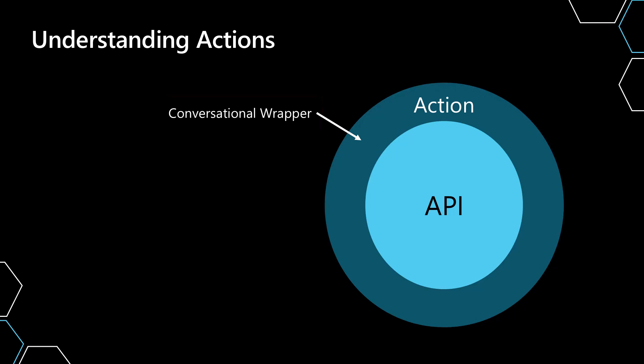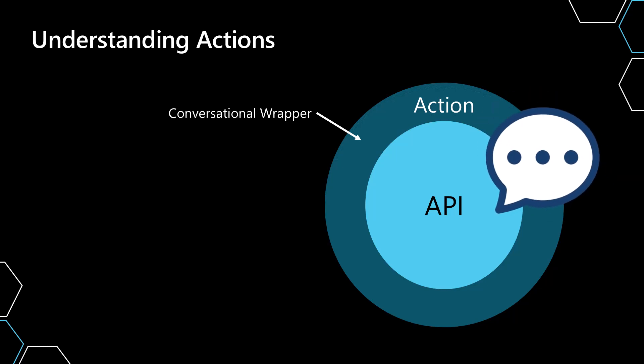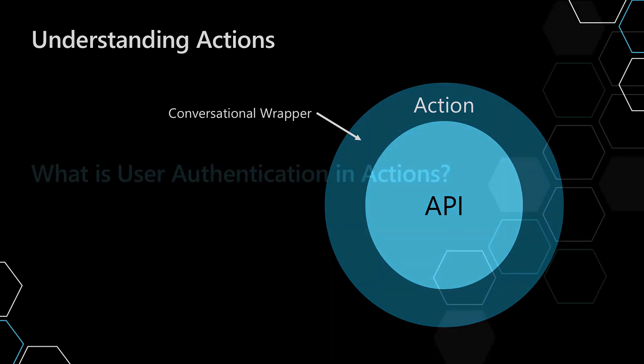We can do this with Power Automate flows, with bot framework bots — otherwise known as skills — and with a connector. In the end, you're really just trying to talk to an API through a conversational interface, just like you're talking to a person.